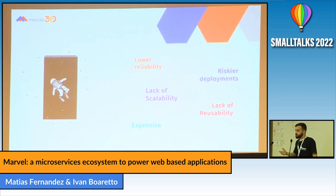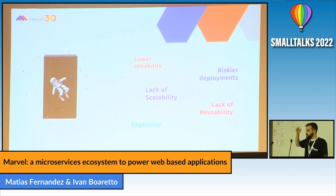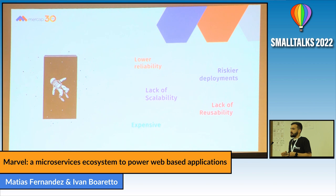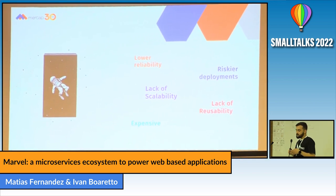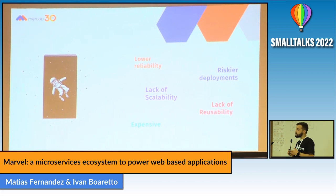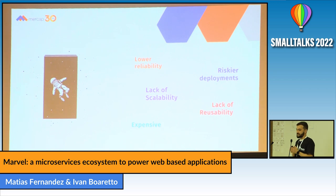Something we usually saw in our clients was that having a big monolith meant lower reliability — meaning that sometimes when a module fails, the whole system fails. Which is a really troublesome moment because if the whole system fails in a banking system, that is a big problem.